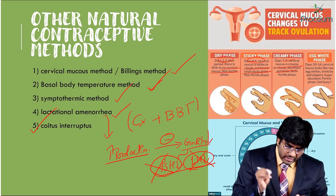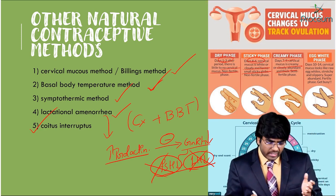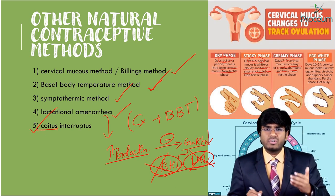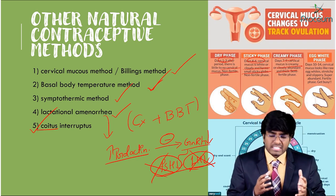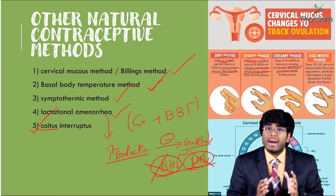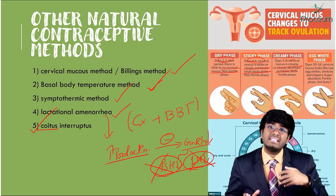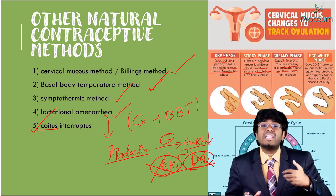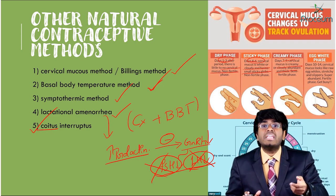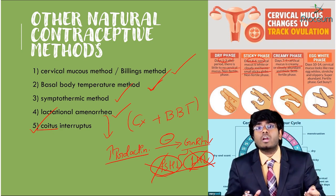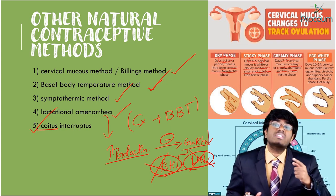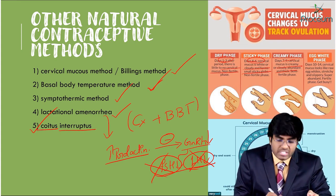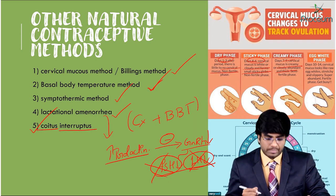The final method is coitus interruptus. The partners are indulging in sexual activity, but just before ejaculation, the male withdraws and ejaculates outside the female body. This is also a natural method of contraception.